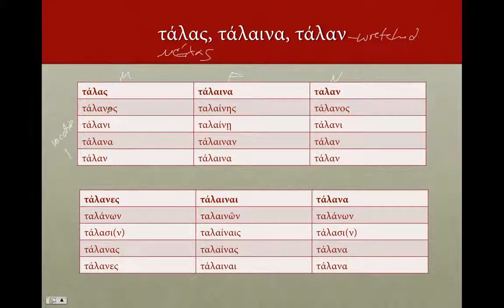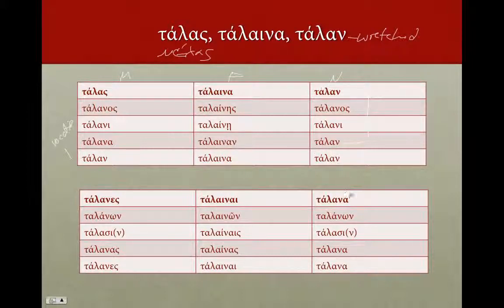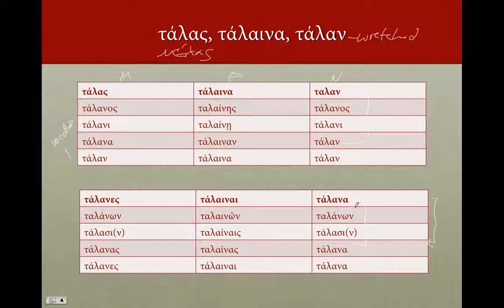Otherwise the endings are exactly as you would expect. In the neuter: talon, talanos, talani, talan — the nominative is the same as the accusative. In the plural: talana, talanon, talasi, talana. The neuter plural nominative ends in alpha, and the accusative is the same as the nominative.